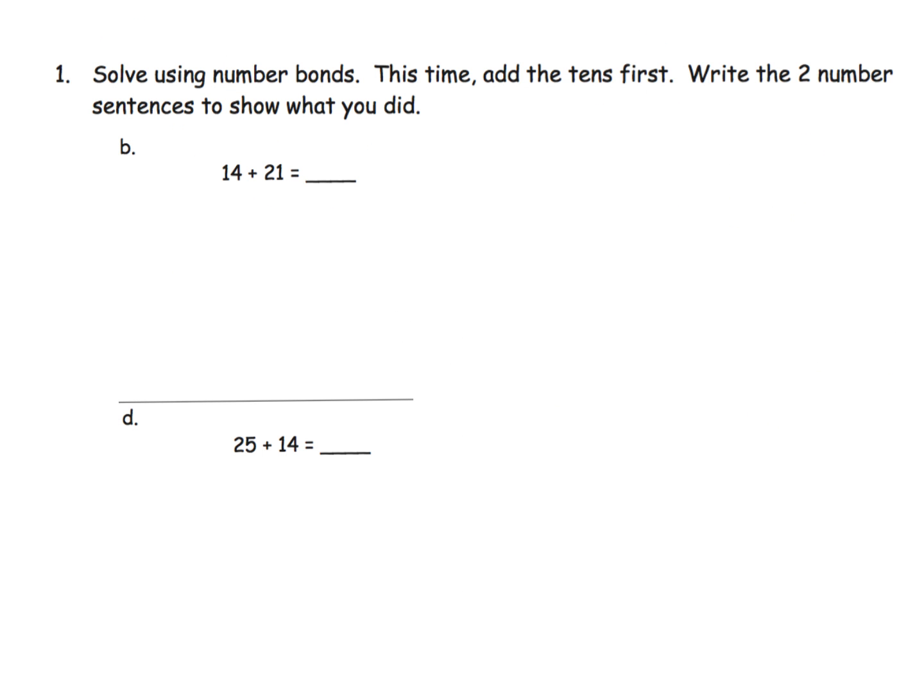So here we are being asked to solve specifically using number bonds. And they also want us to make sure we add the tens first. So keeping that in mind, I'll write it a little bit bigger so that we can see: 14 plus 21. And we're going to decompose the teen number. Although, ultimately, students are going to learn how to solve the problem decomposing either of the numbers, or perhaps even both of the numbers. But we're going to decompose 14 to be 10 and 4.